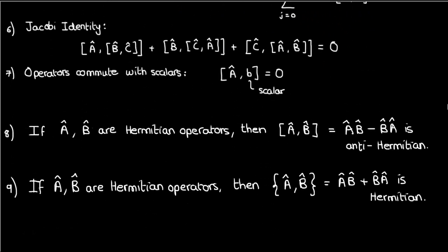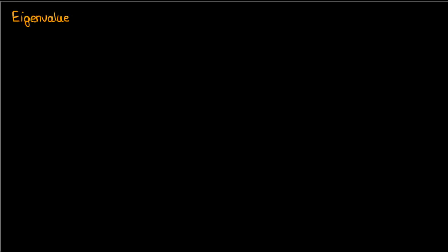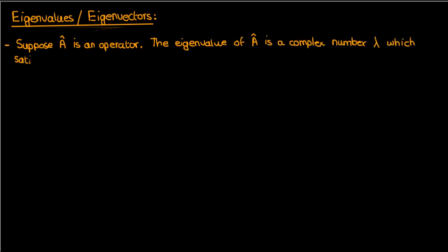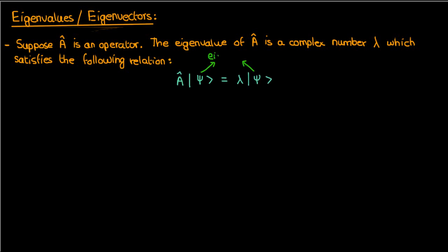Now that we've covered the definitions and properties of commutators, we can talk about eigenvalues and eigenvectors. You might already know what these are, but I'll review them anyway — the quantum mechanics context will be useful for future videos. Starting with an operator a-hat, the eigenvalue of a-hat is a complex number lambda which satisfies the following relationship. The vector psi is called the eigenvector, and this whole equation relating a-hat, lambda, and psi is called the eigenvalue problem.